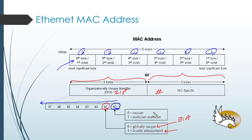So this is the structure of a MAC address. As I mentioned, the first byte is the most significant. The numbering within that first byte is the opposite of what you might expect — it goes from right to left. And that's it. Thank you.